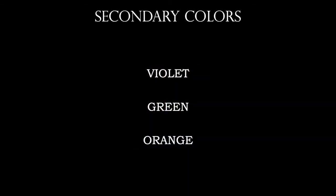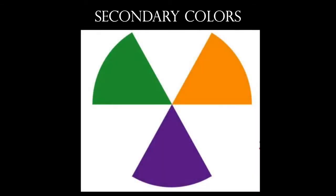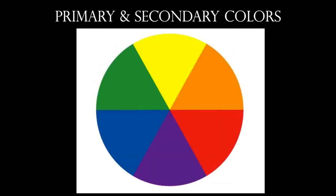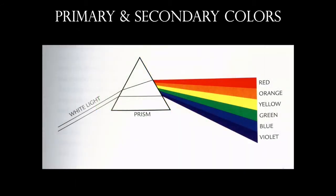The secondary colors are violet, green, and orange. They're created when two primary colors are mixed together. Mixing blue and yellow creates green; yellow and red creates orange; blue and red creates violet. Together, the primary and secondary colors make up the six hues — red, orange, yellow, green, blue, and violet — and for most people, that's the easiest way to remember them.